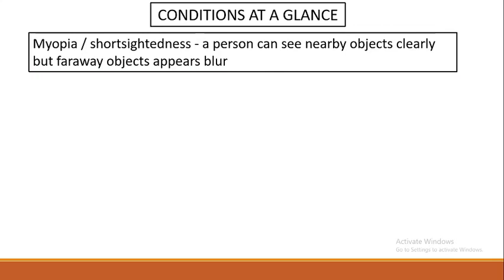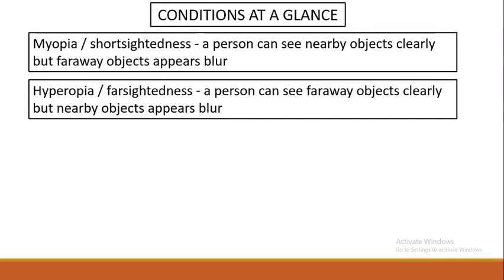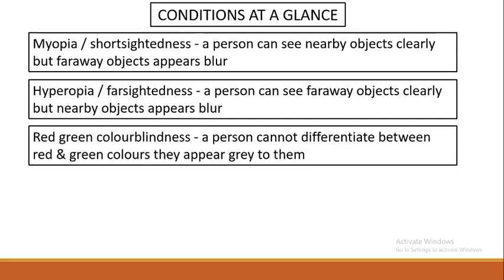Let me explain these conditions briefly. Myopia is short-sightedness — a person can see only nearby objects clearly but far-away objects appear blurred. Hyperopia is far-sightedness or long-sightedness — a person can see far-away objects clearly but nearby objects appear blurred. Red-green color blindness means a person cannot differentiate between red and green colors; such colors appear gray to them.